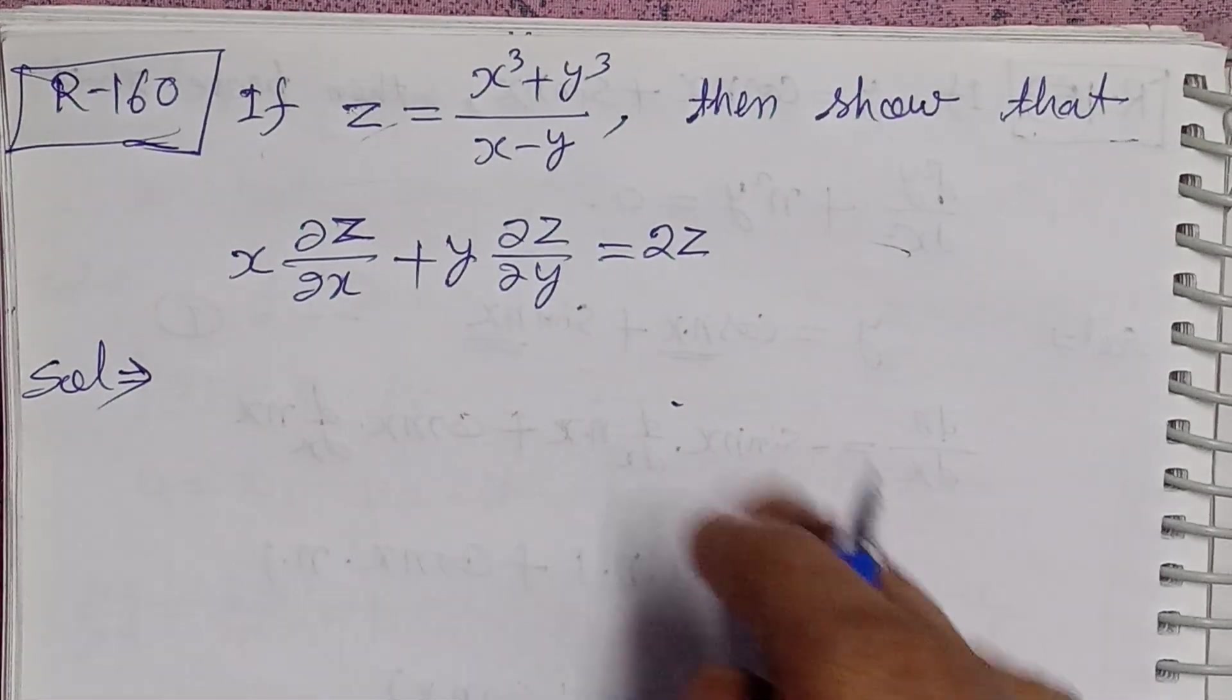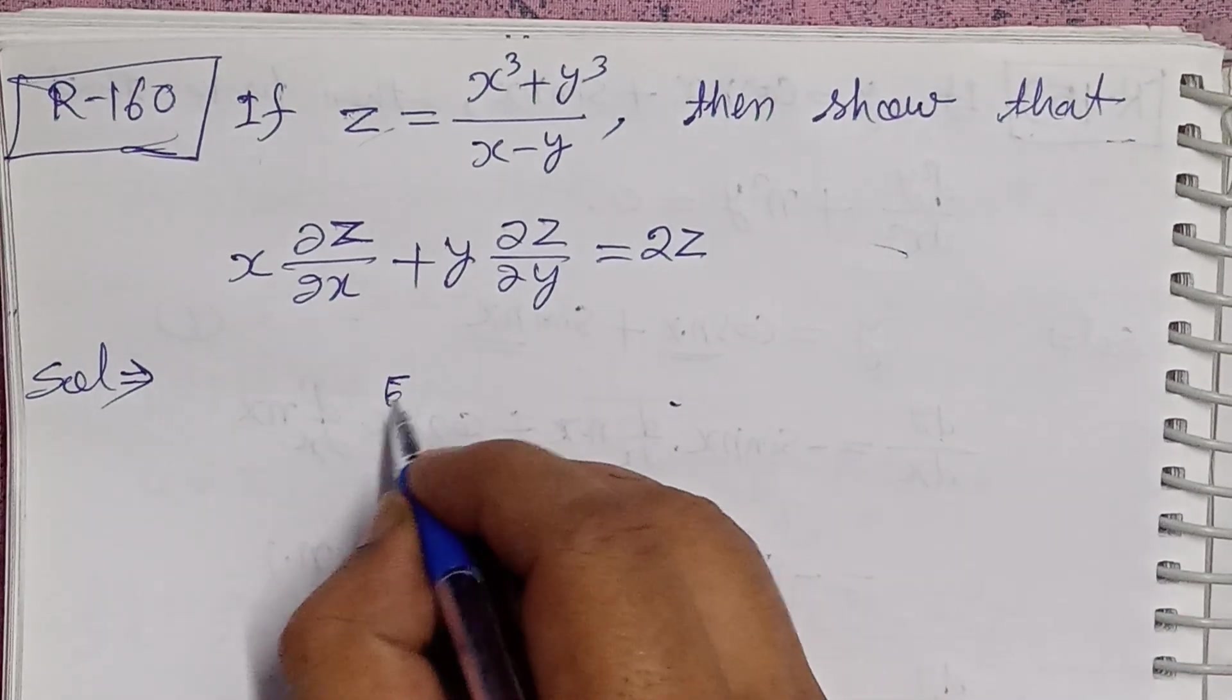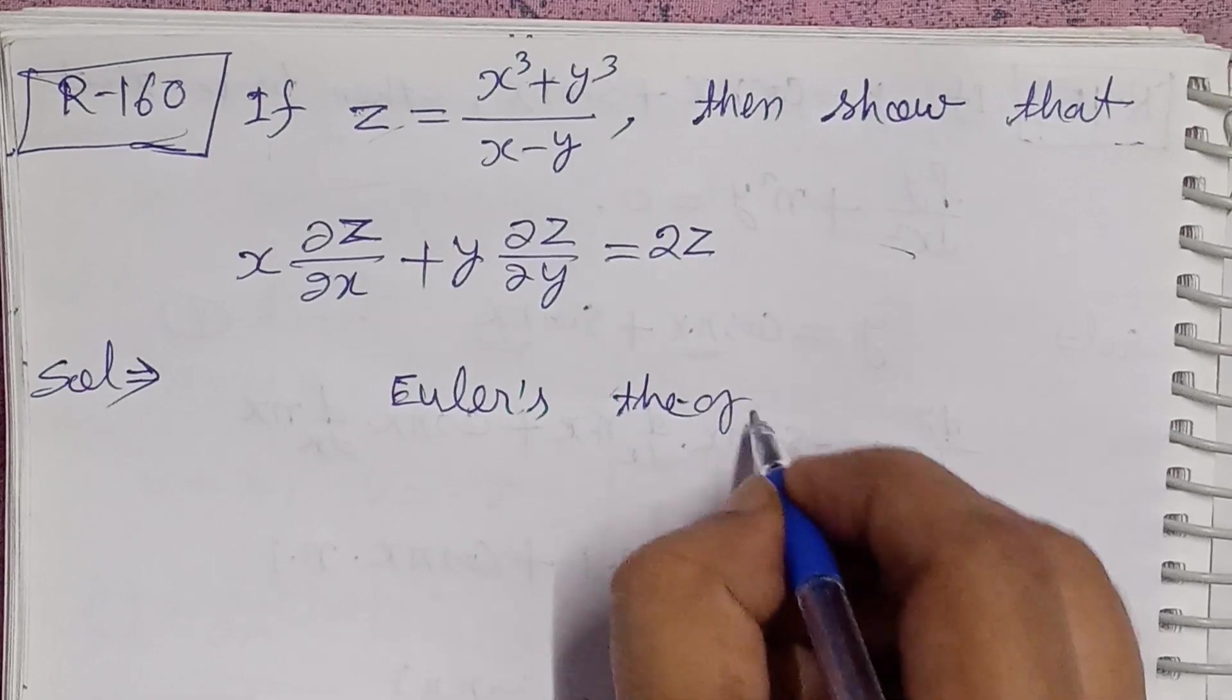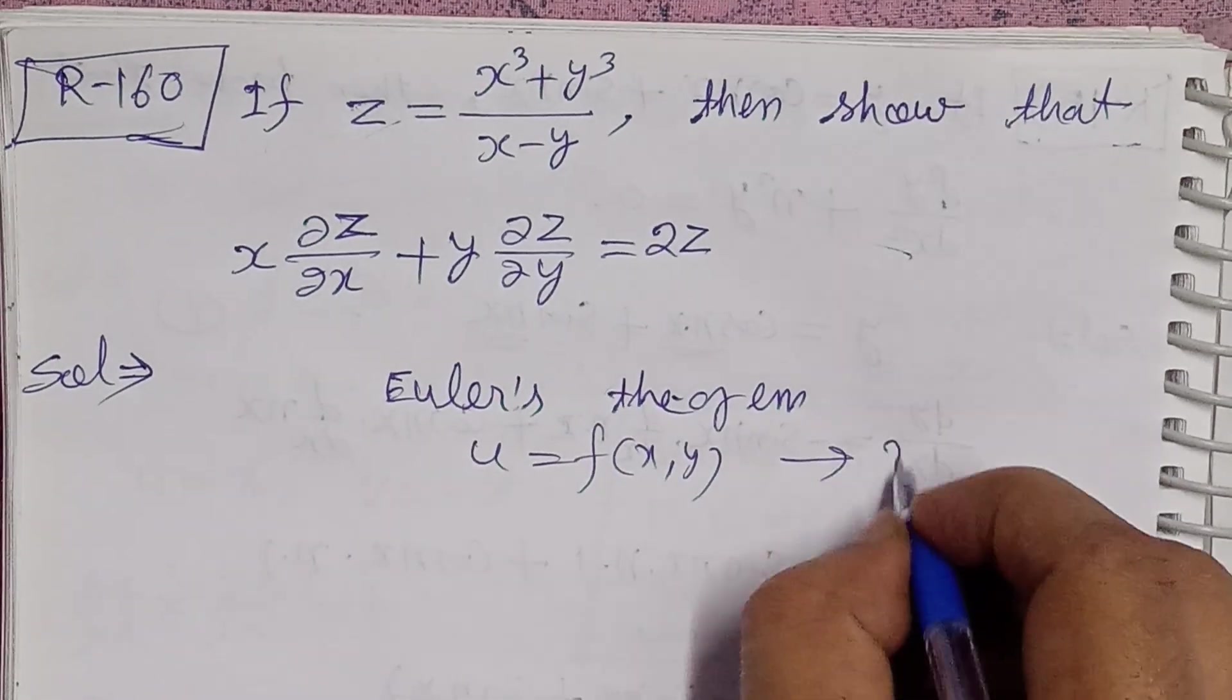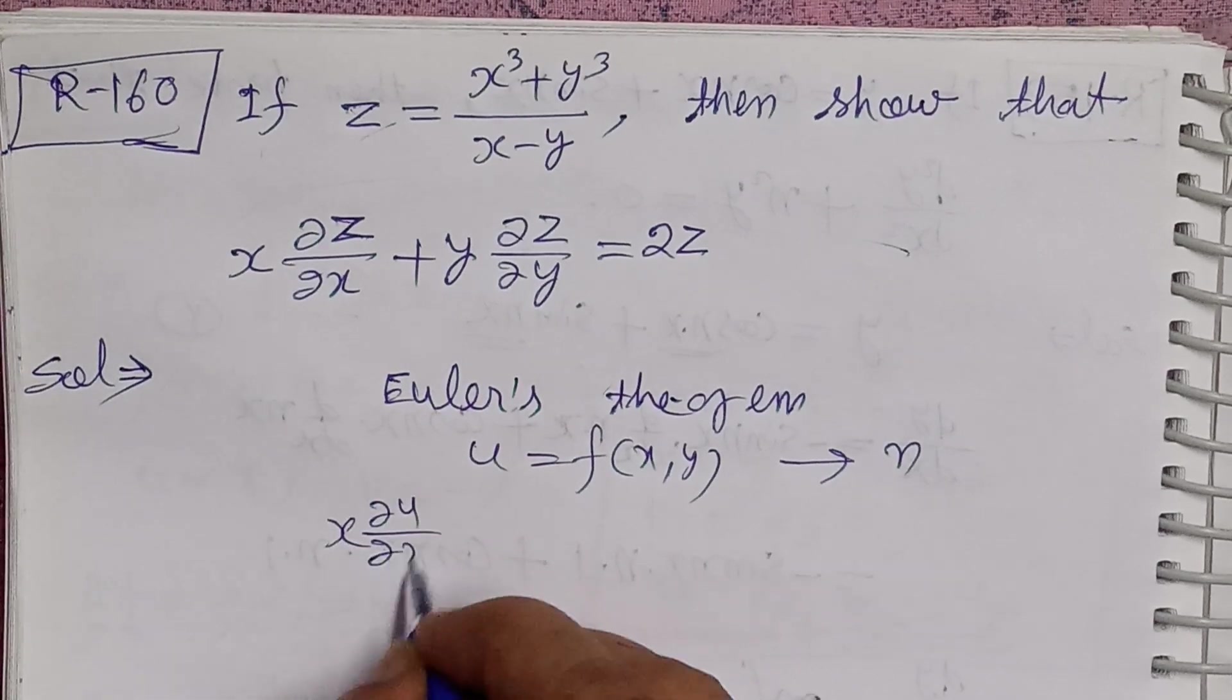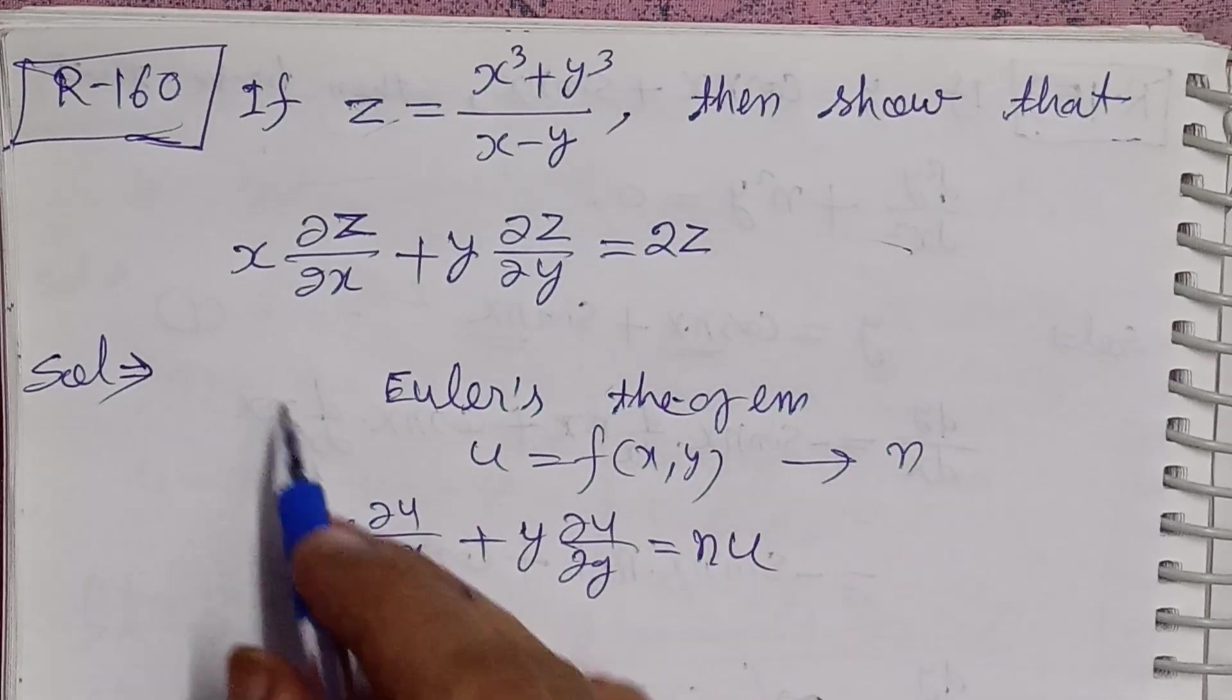Before we start solving this, let's look at Euler's theorem. Euler's theorem states that if u is a function of x and y, and it's a homogeneous function of degree n, then x del u over del x plus y del u over del y is equal to n u. This is Euler's theorem.